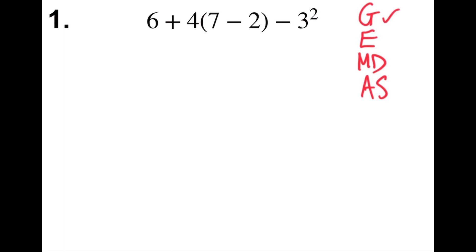So we're going to start out with grouping symbols. I have 7 minus 2 in parentheses. That will give me 5. So 6 plus 4 times 5 minus 3 squared.